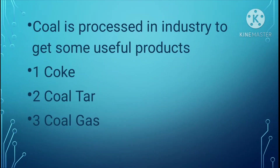After this, coal is processed in industries to make useful products. The useful products include coke, coal tar, and coal gas. Let us understand them in detail.